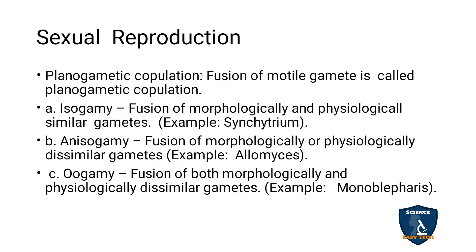Now we will see sexual reproduction. In sexual reproduction, we are going to see planogametic copulation — that is the fusion of motile gametes. Motile means moving gametes, like sperm and egg. The male gamete and female gamete fuse. That is called planogametic copulation, and it is divided into three types: isogamy, anisogamy, and oogamy.